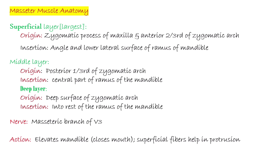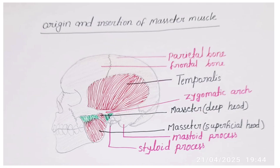Deep layer originates from the deep surface of the zygomatic arch and inserts on the rest of the ramus of the mandible. It is supplied by the masseteric branch of the mandibular nerve. Its primary action is elevation of the mandible, helping close the mouth. Superficial fibers also assist with protrusion. This diagram shows the origin and insertion of the masseter muscle. Superficial fibers pass downwards and backwards at a 45-degree angle, while deep and medial fibers pass vertically downwards.